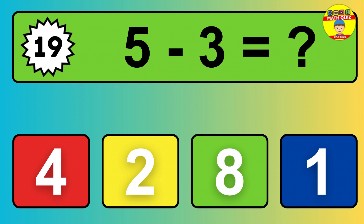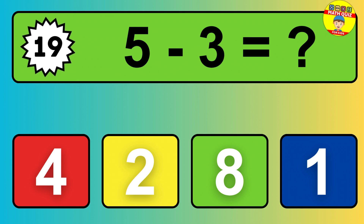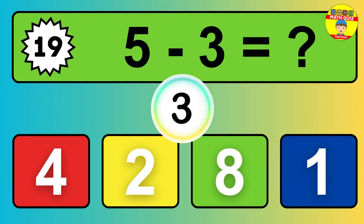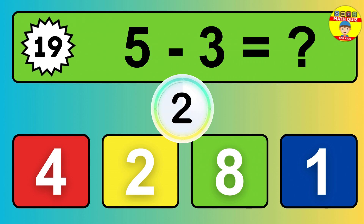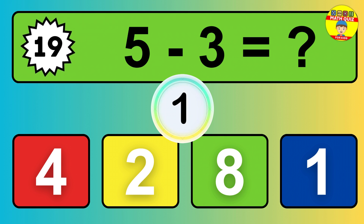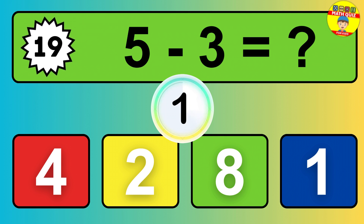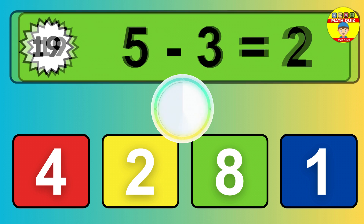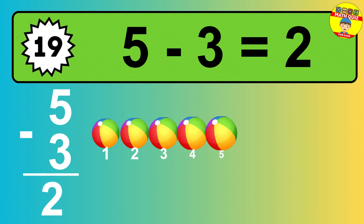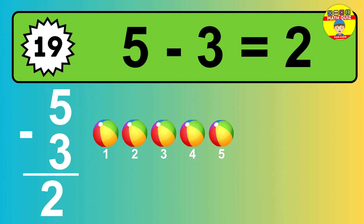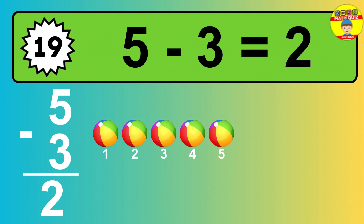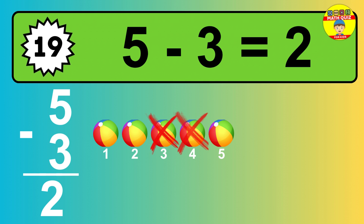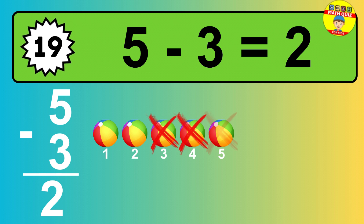Question nineteen: five minus three equals what? So the answer is, five minus three is two. Let's count it. One, two.